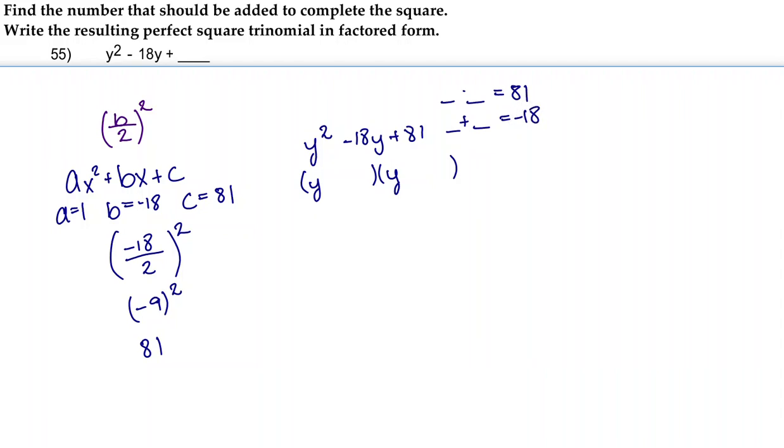When we look at factors of 81, we have 1 and 81, and we also have 9 and 9. That's all we really need to know because 1 times 81 makes 81, 9 times 9 makes 81, and negative 9 times negative 9 makes 81, which also add to make negative 18.